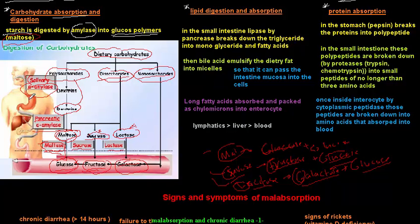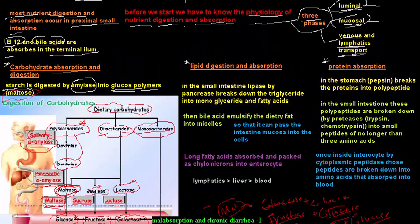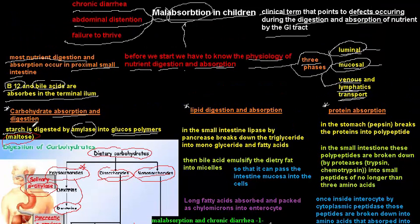Similarly, if there is a problem with amylase, the polysaccharides or starch will not be broken down into maltose — the disaccharide form — leading to malabsorption. This is how carbohydrates are normally absorbed, and enzyme deficiencies at any step can disrupt the process.